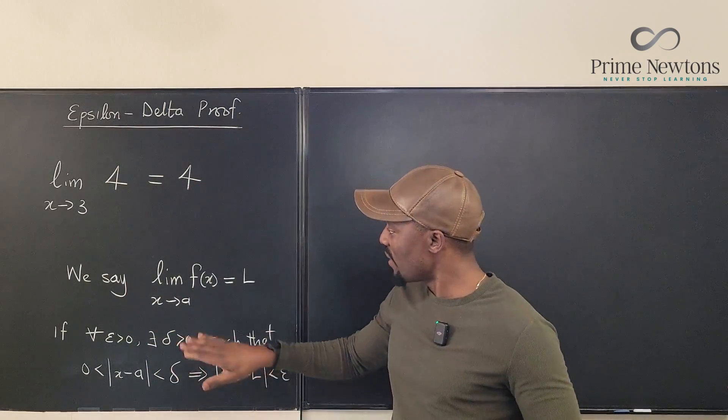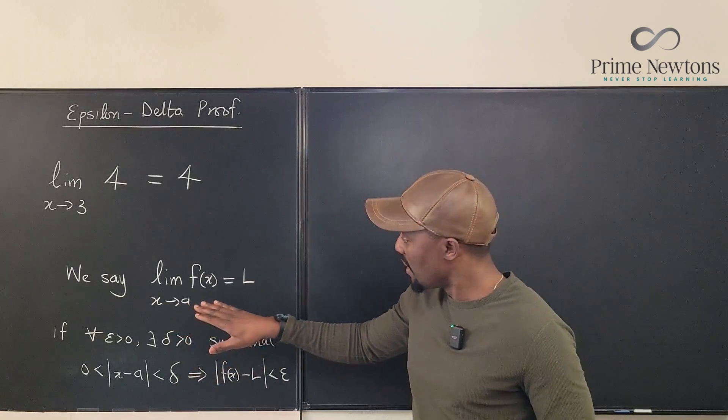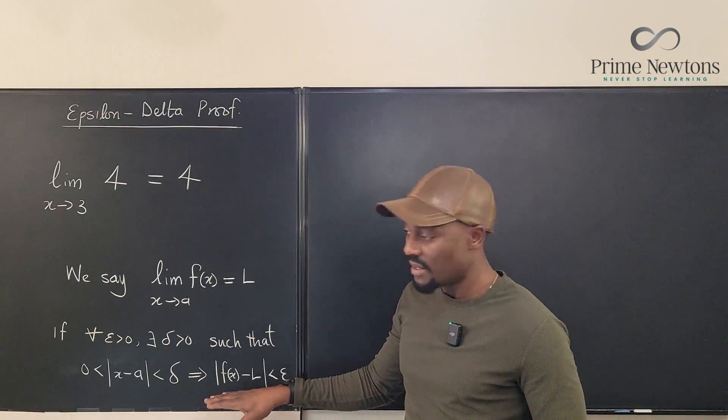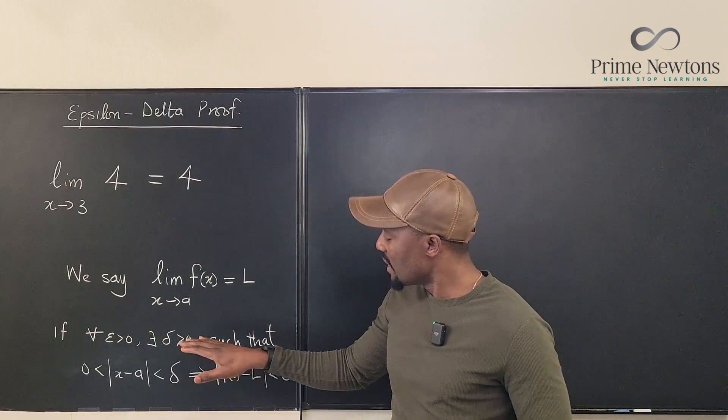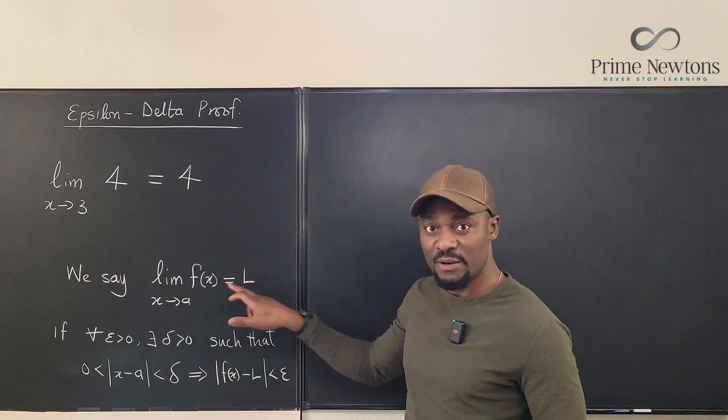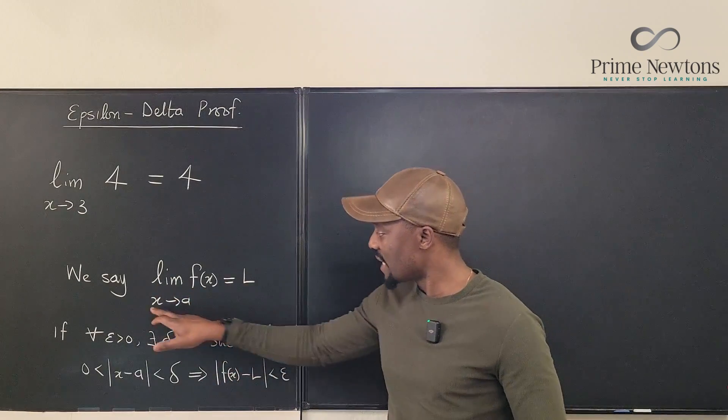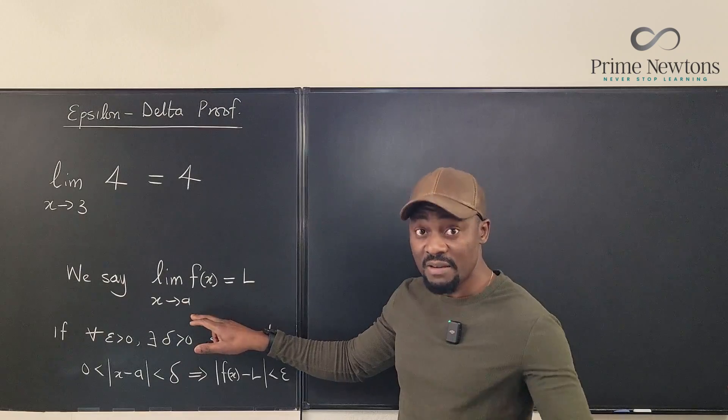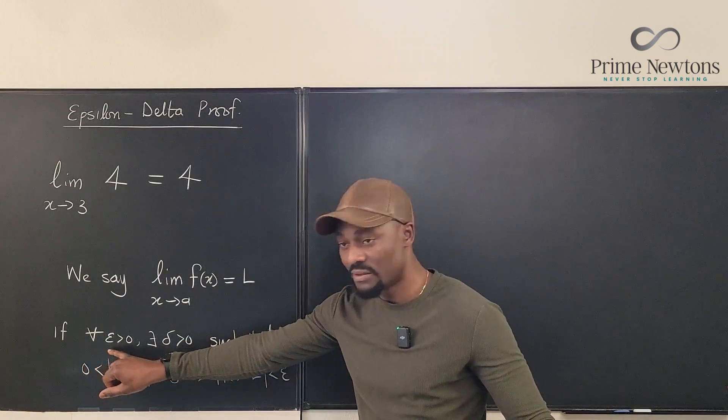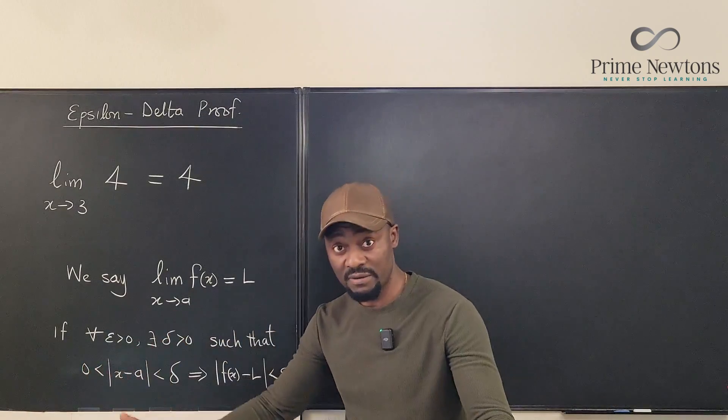If we try to use the definition of a limit, saying that the limit of a function is equal to L as x approaches A, if for all epsilon greater than 0, for all positive values of epsilon,